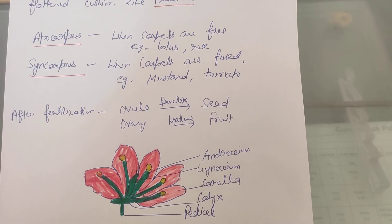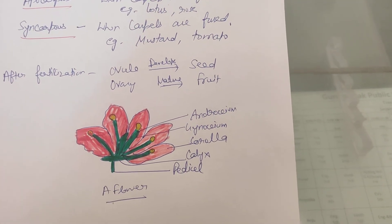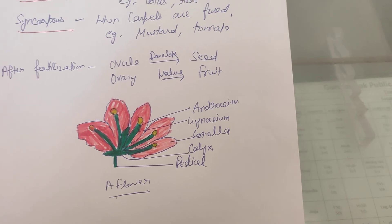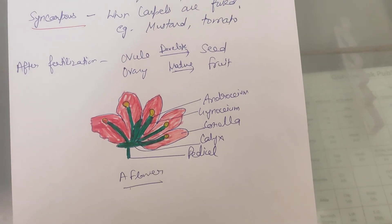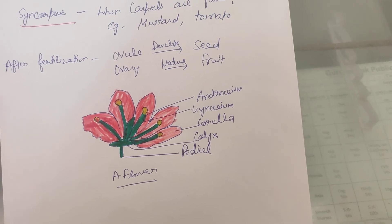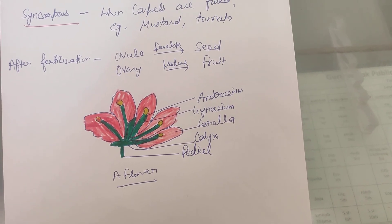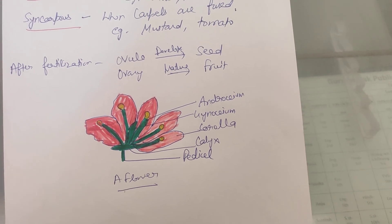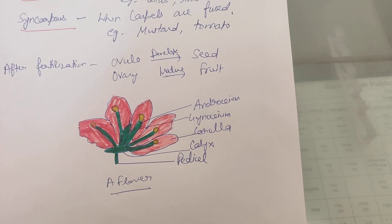After fertilization, the ovule becomes a seed and the ovary becomes a fruit. You can see this diagram of a typical flower — the green leaf-like structure is the calyx, then the brightly colored corolla, and then the gynosium and androsium. These are the parts of a typical flower. Thank you.